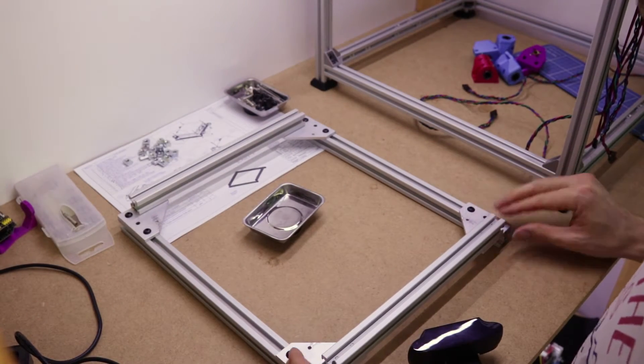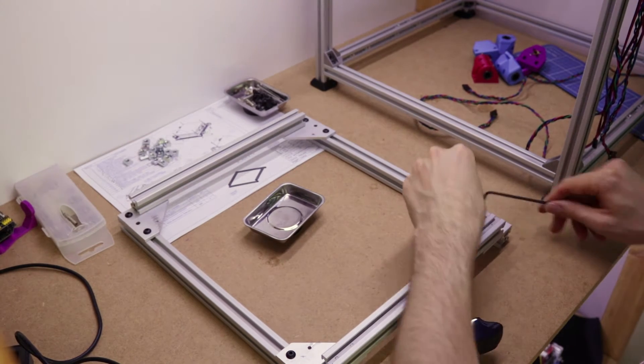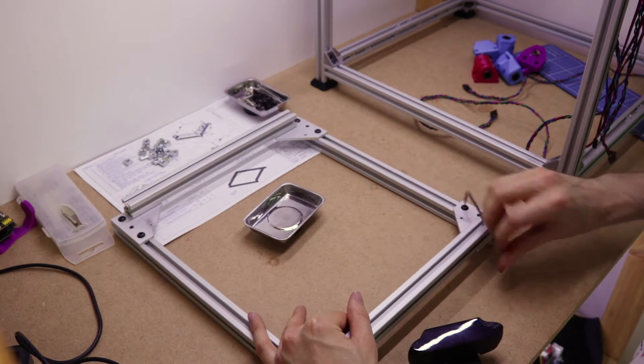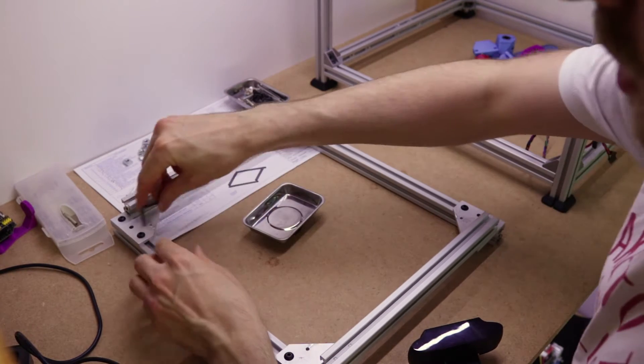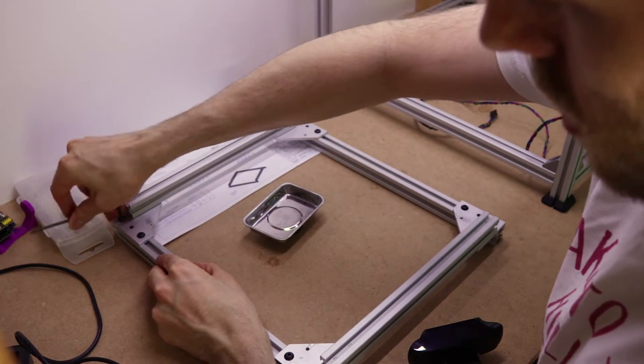Once you've done this main part of the frame, you want to go through all the screws that you've put in. Make sure they are nice and tight. As always, don't go stupid tight, don't try and bend the anchor or anything crazy. Just get them tight enough.